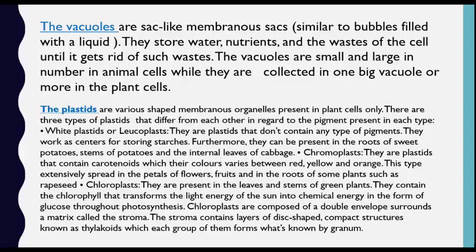The second kind is chromoplasts — 'chromo' means colored. They are plastids that contain carotenoids whose colors vary between red, yellow, and orange. This type is extensively spread in the petals of flowers and fruits, and also in the roots of some plants such as carrots.